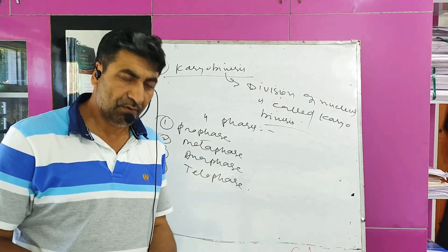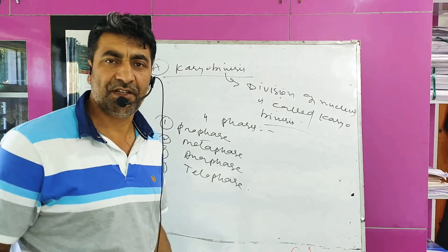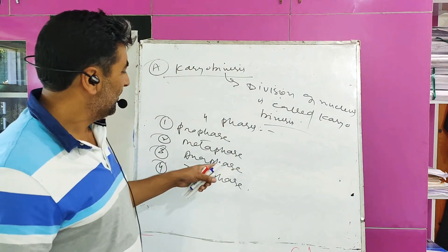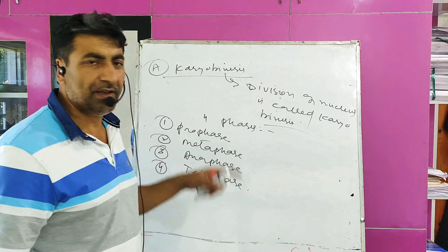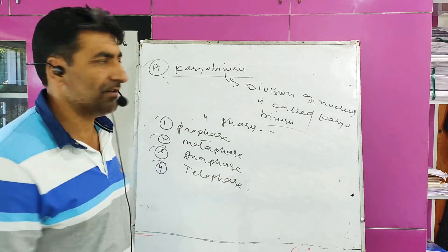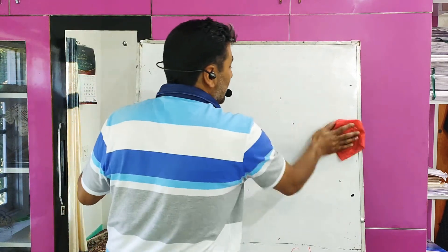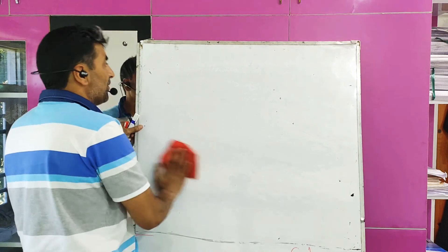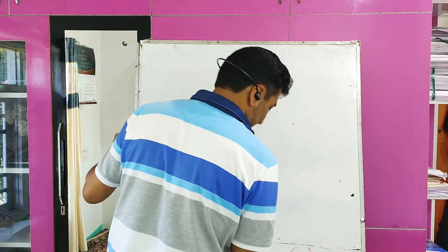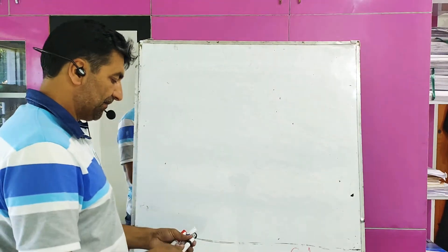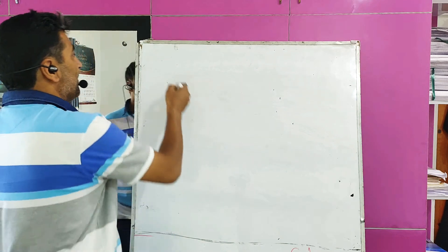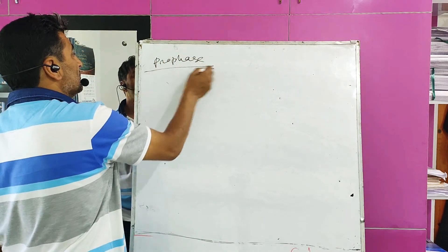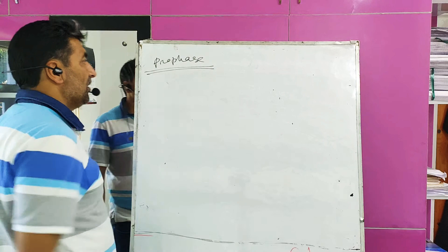All these are the four sub-stages of karyokinesis. Today we will discuss prophase only. What are the various changes which occur during prophase in mitosis?